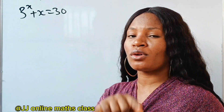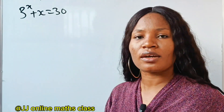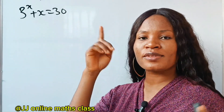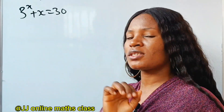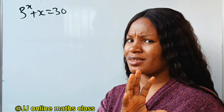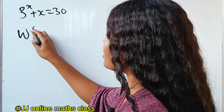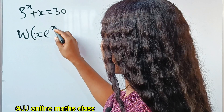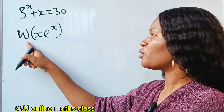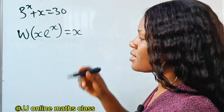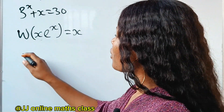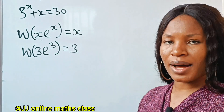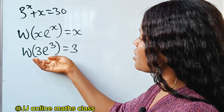You can only solve this using the Lambert W function, or if you plug into a graph — you cannot solve it using algebra alone. So let's go ahead and use the Lambert W function to solve this. The Lambert W function works in this form: if you plug in something like x to the power of x into the Lambert W function, you get x back. So if you plug in 3e^3, you get 3 back.